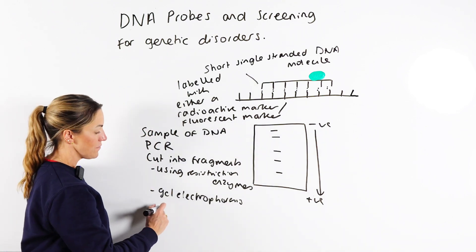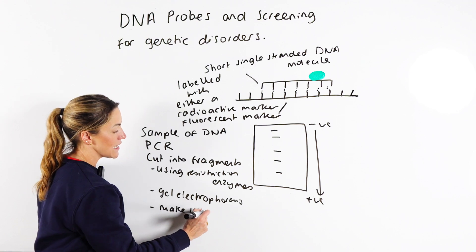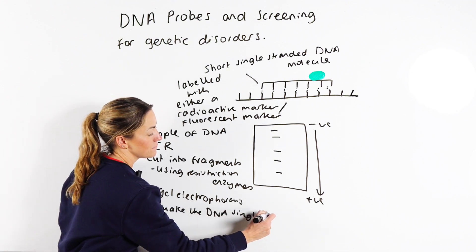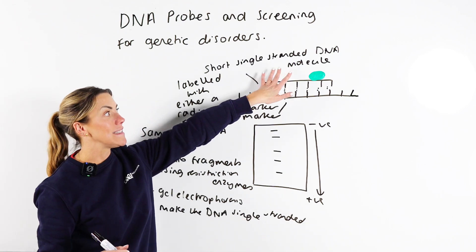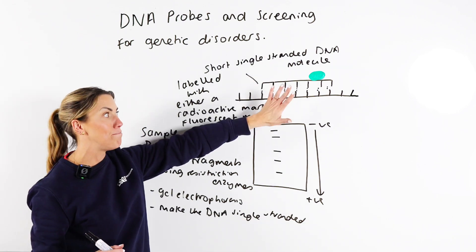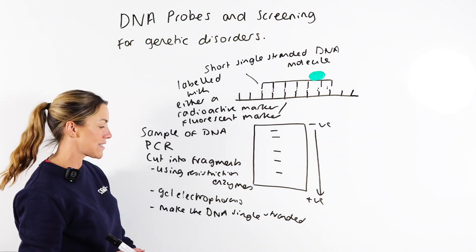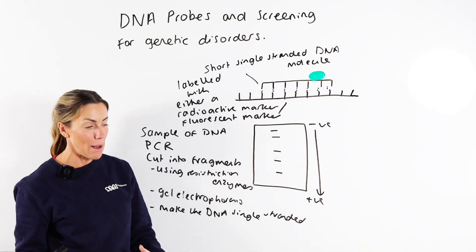Then what you can do is make the DNA single-stranded, which you're going to need to do if you're going to be adding DNA probes that you want to bind to any alleles of interest. You are going to need to make the DNA single-stranded so that can happen.